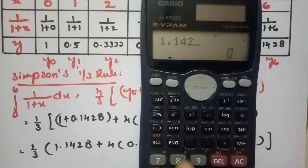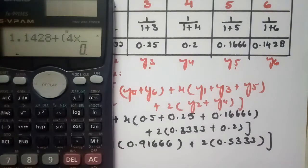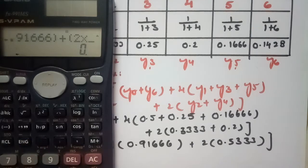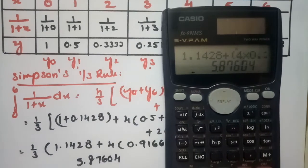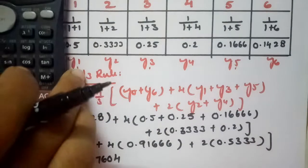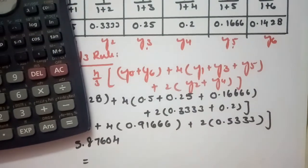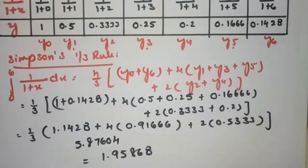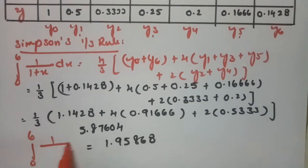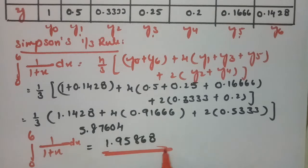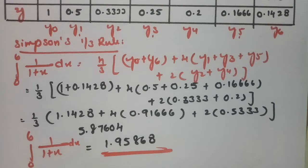Computing: 1.1428 + 4×0.91666 + 2×0.5333 = 5.87604. Dividing by 3 gives 1.95868. So according to Simpson's one-third rule, the integral from 0 to 6 of 1/(1+x) dx ≈ 1.95868.